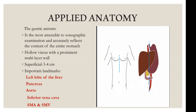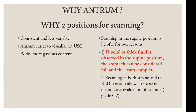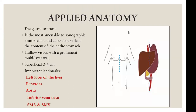We focus on the gastric antrum rather than the whole stomach because it is more consistent and less variable. The body of the stomach has more gaseous content, whereas the antrum and fundus have more consistent volumes correlating with aspiration risk. The fundus is more difficult to visualize, while the antrum is consistently seen in most cases. It is also superficial, at around 3 to 4 centimetres. The surrounding anatomy — left lobe of liver, pancreas, and superior mesenteric artery — helps in correct localization.